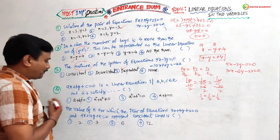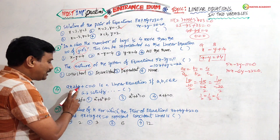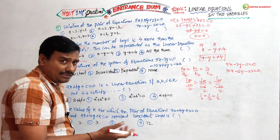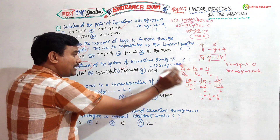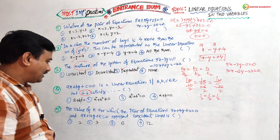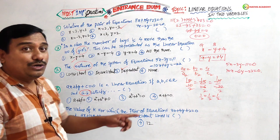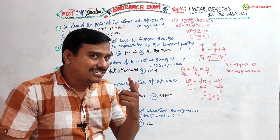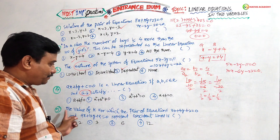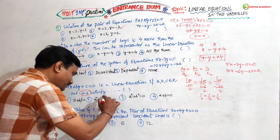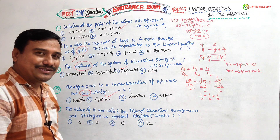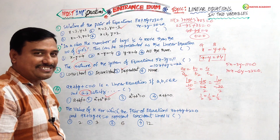Fourth question: ax + by + c = 0 is a linear equation. If a, b, c belong to real numbers, what condition must a and b satisfy? I told you in the mind mapping — the condition is a² + b² ≠ 0. Perfect answer.